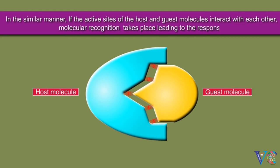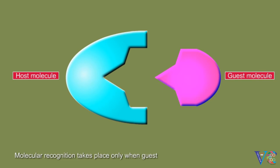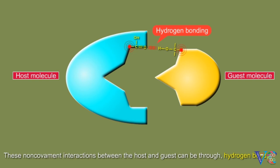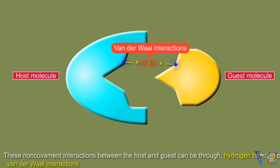Molecular recognition takes place only when guest molecule recognizes the host molecule by virtue of non-covalent interactions. These non-covalent interactions between the host and guest can be through hydrogen bonding, or van der Waals interactions, or pi-pi interactions, or electrostatic interactions, or metal coordination.